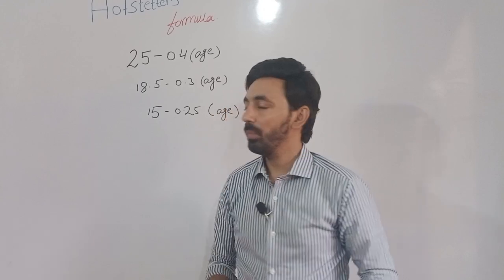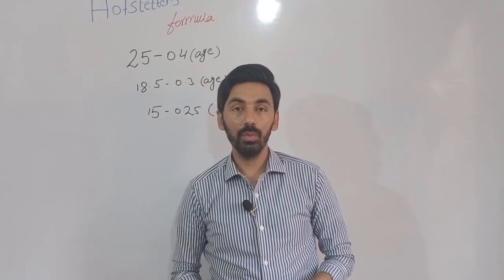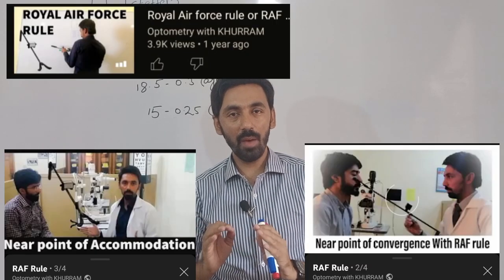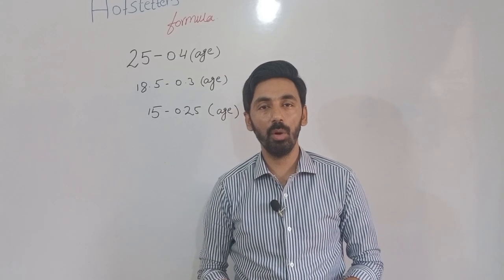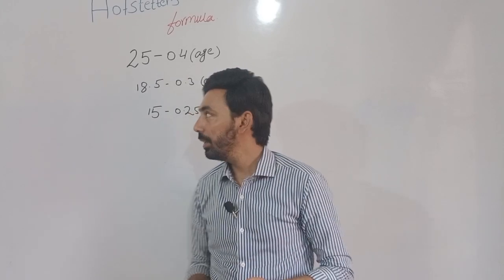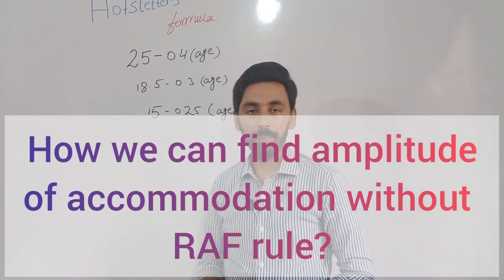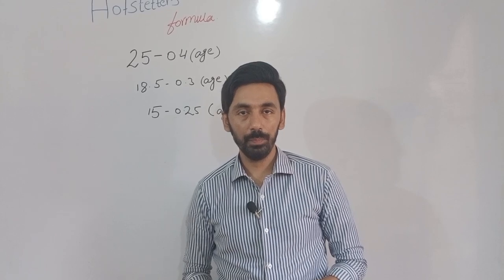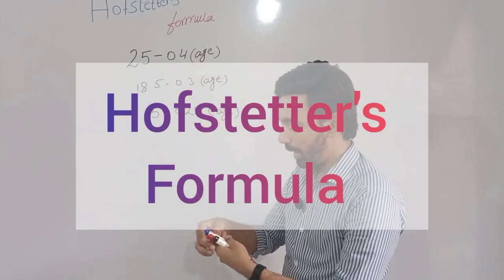We have discussed that we can find the amplitude of accommodation with the help of the RF rule. We have detailed videos regarding the RF rule, covering how to find amplitude of accommodation with the RF rule, near point of convergence, near point of accommodation, and more. Now in this video we are going to learn how we can find the amplitude of accommodation without the RF rule, using Hofstetter's formula.